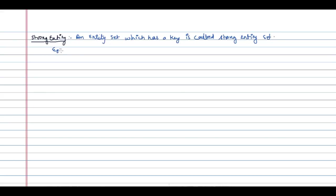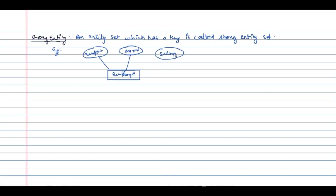If an entity has a key, that means it is a strong entity. For example, if the entity is Employee, it has attributes: employee number, employee name, and employee salary. Here, employee number is a key attribute, and it can be used as a primary key for the relation in this ER diagram.